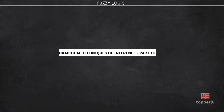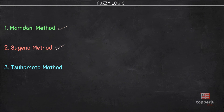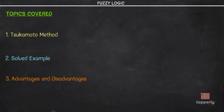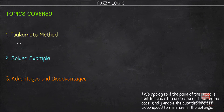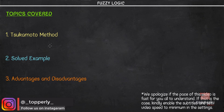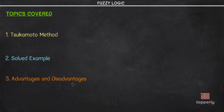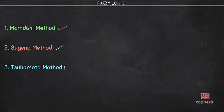Hey everyone! Welcome back to FuzzyLogic lectures. In the last video, we looked into what the Sugino method is and we solved an example based on this concept. In this lecture, we'll be learning what the Sukumoto method is, we'll be solving an example based on this, and we'll look at a few advantages and disadvantages associated with this method. So let's get started.